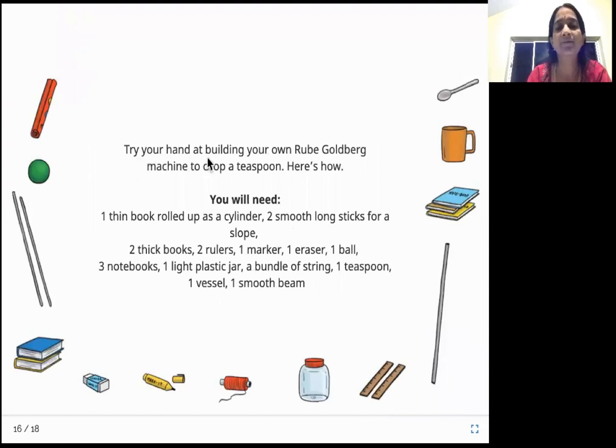Try your hand at building your own Rube Goldberg machine to drop a teaspoon. Here is how. You will need one thin book rolled up as a cylinder, two smooth long sticks for a slope, two thick books, two rulers, one marker, one eraser, one ball, three notebooks, one light plastic jar, a bundle of string, one teaspoon, one vessel and one smooth bead. These are all the things that you would need to make a very simple Rube Goldberg machine. What are we going to make it do? It is going to drop a teaspoon onto a vessel. Let's see how we can plan and do it.